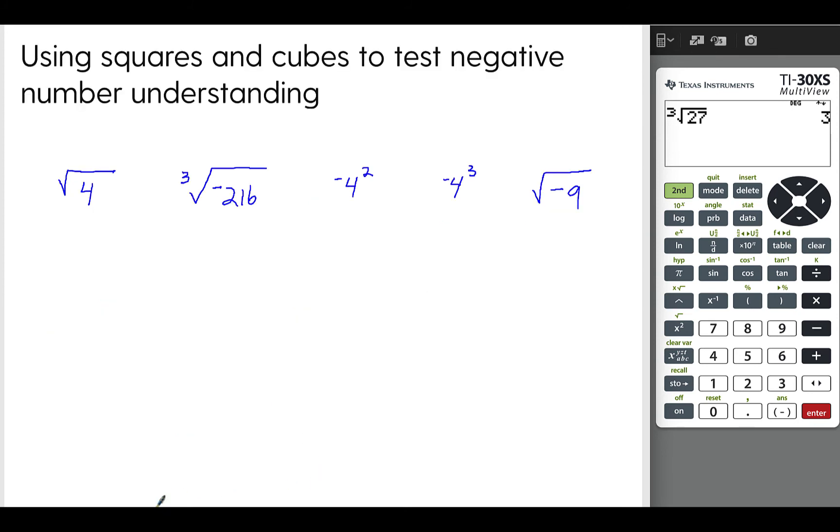So using squares and cubes to test negative number understanding. Again, you have the square root of 4. This could be, not that square root. The answer could be 2. 2 times 2 is 4. But so is negative 2.